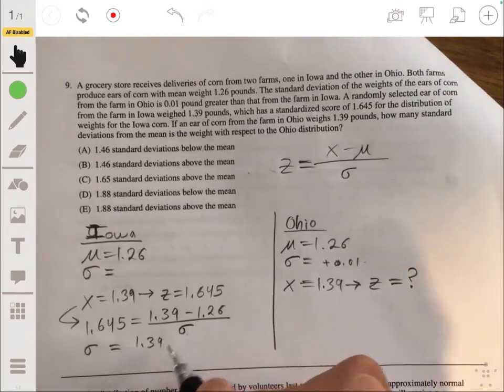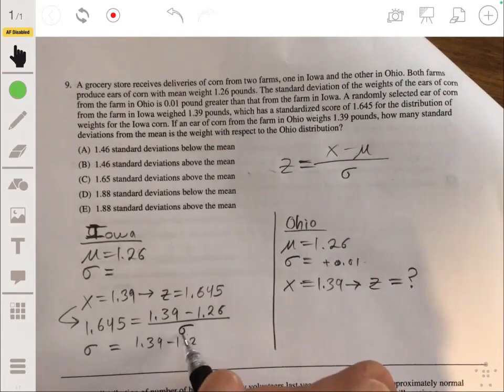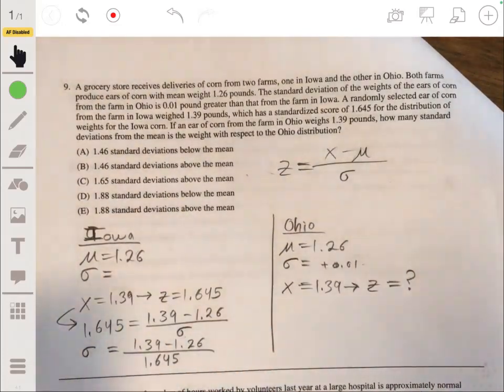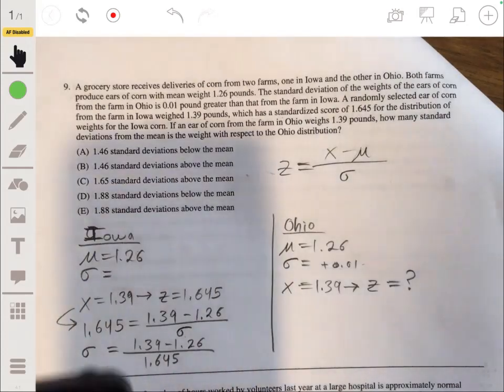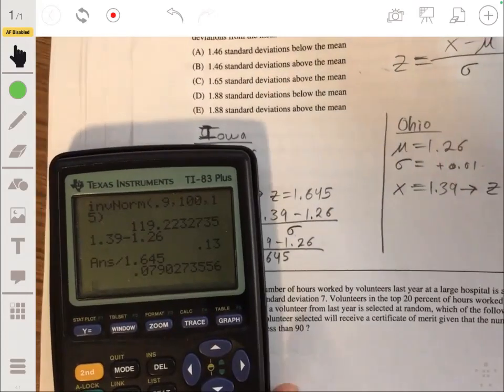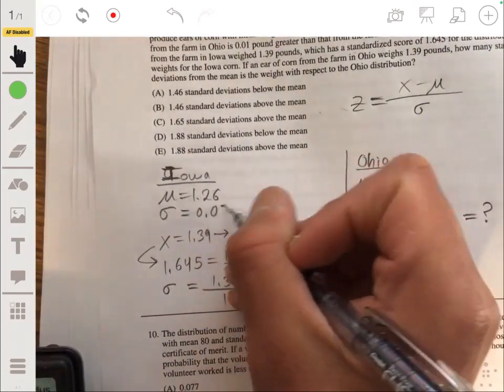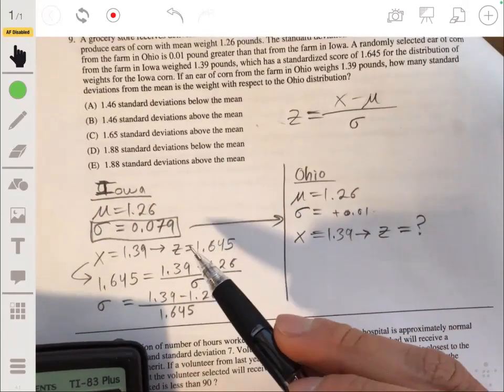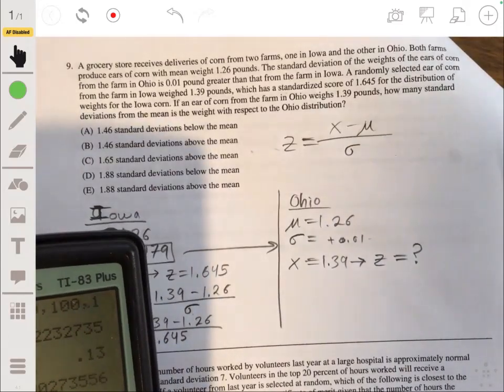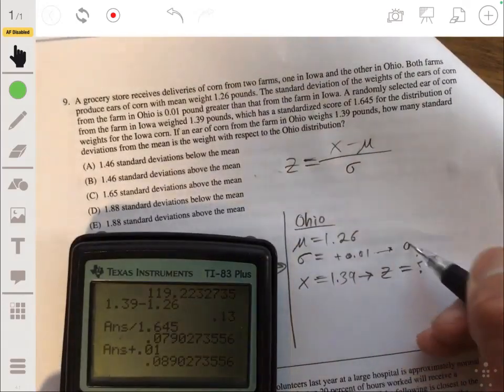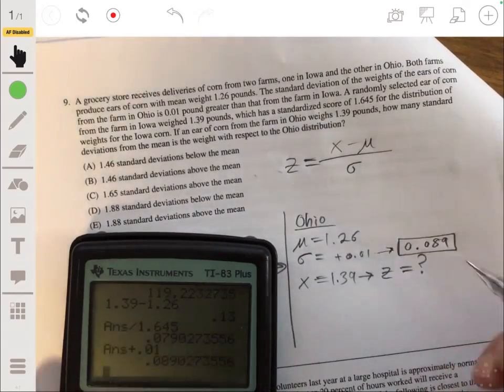So we can solve for sigma here by multiplying that side by sigma. And then dividing, let's just swap the 1.645 and sigma. So that divided by 1.645 gives standard deviation of 0.079.